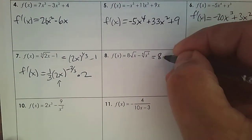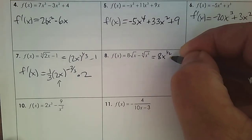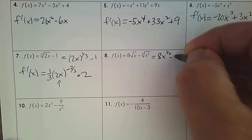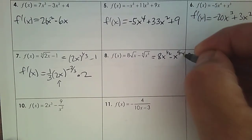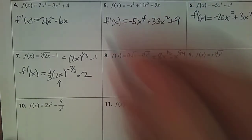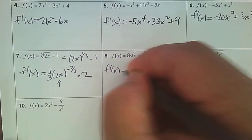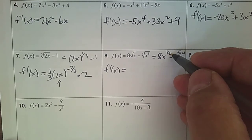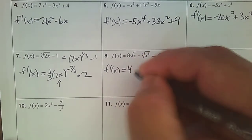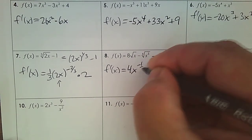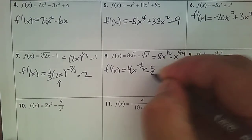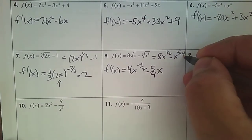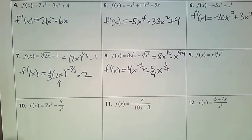Write this calculus friendly: 8x to the 1/2 minus x to the 5/4. Take the derivative. So 1/2 times 8 is 4, subtract 1. 5/4 times negative 1 is just 5/4. 5 take away 4 is 1 over 4. And you are doing this flying.